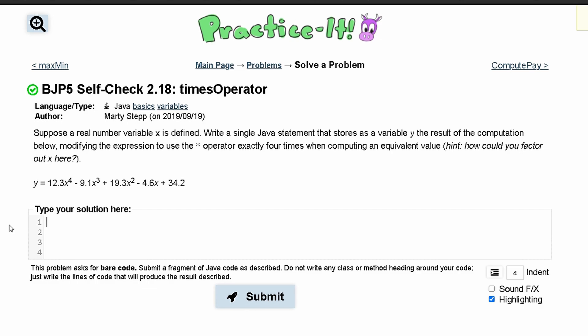For Practice-It Self-Check 2.18 times operator, we are told to suppose a real number variable x is defined. So you have something like int x equals 9. We need to write a single Java statement that stores as a variable y the result of the computation below, modifying the expression to use the times operator exactly four times.